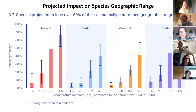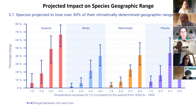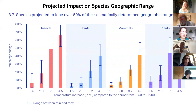Looking at individual species — insects, birds, mammals, and plants — and when they will lose 50% of their climatically determined geographic range: for insects, a 1.5°C change means about 5% loss; at 2°C, 18% loss; at 3.2°C, almost 50% loss; and at 4.5°C, about 68% loss. Similar trends apply to birds, mammals, and plants. Even 1.5 degrees Celsius is actually bad for biodiversity.